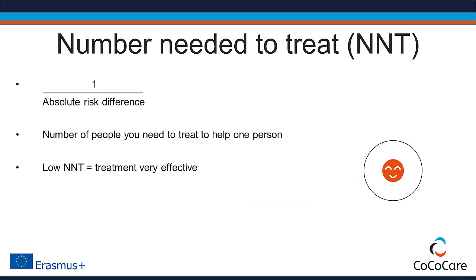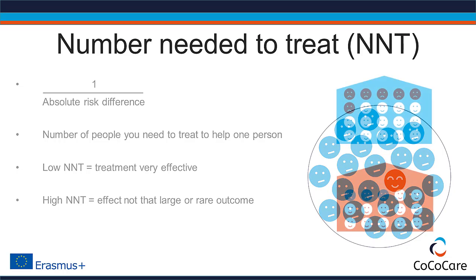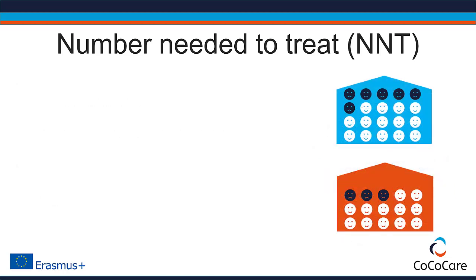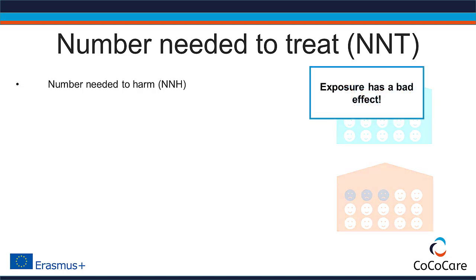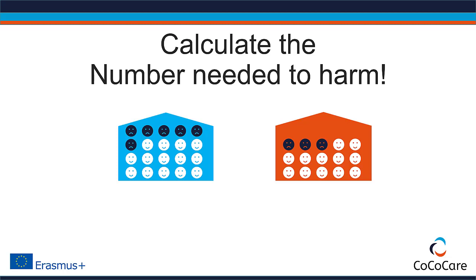If the effect of the treatment is not that large, or if the outcome you aim to prevent is very rare, you would have to treat lots of patients to help one of them. In our example of the two classrooms, the number needed to treat would be called the number needed to harm instead — it follows the same principle, only making clear that the exposure has a bad effect. It could tell you how many children must be exposed to the cold in order to get one ill child that would not be ill if the heating system had worked. Can you calculate the number needed to harm? Remember: in the cold classroom, 6 out of 20 children got ill; in the warm classroom, it was 3 out of 15.